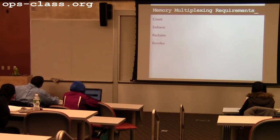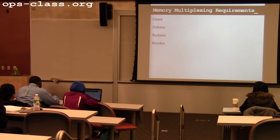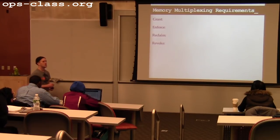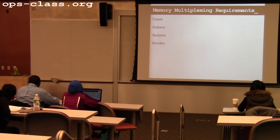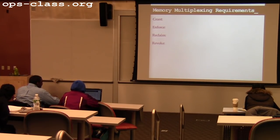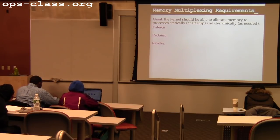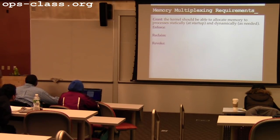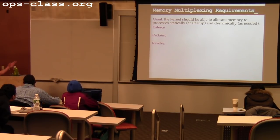We had four requirements for how we're going to multiplex memory. The first is granting memory — the kernel should be able to allocate memory to processes. We need to be able to give processes memory; that's our responsibility as the kernel. We have the special powers and one of our responsibilities is to actually allocate memory. The second is enforcement — making sure that processes don't seize more memory than is available to them, and don't use memory that belongs to another process. Asking the kernel is the only way processes get memory.